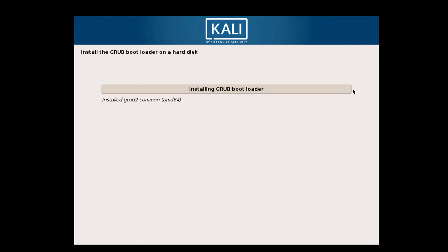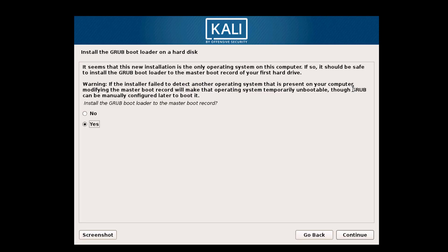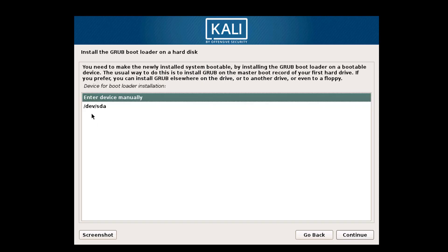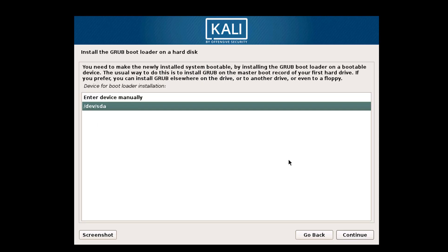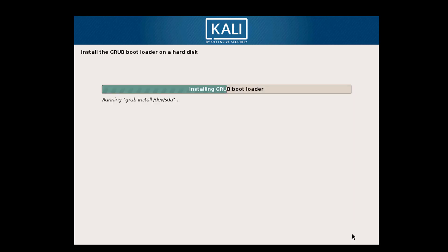Now we install the GRUB bootloader. This is most important — if you are doing a dual boot installation, GRUB plays a very important role in the operating system. Click on Yes, then select the '/dev/sda' option and click on Continue.